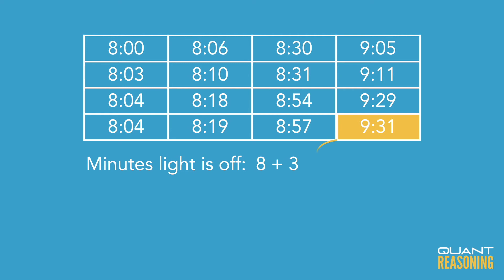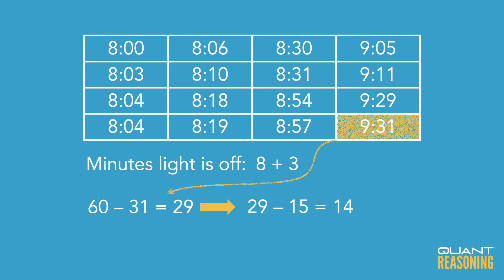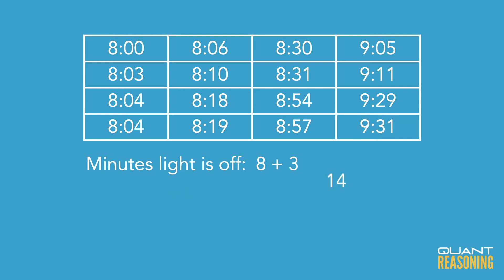Finally, there's one last gap between 9:31 and 10:00 — that's 29 minutes — of which the light would have been off for 14 minutes. Adding that to the 11 minutes already counted gives a total of 25 minutes that the light was off. The answer is choice B.